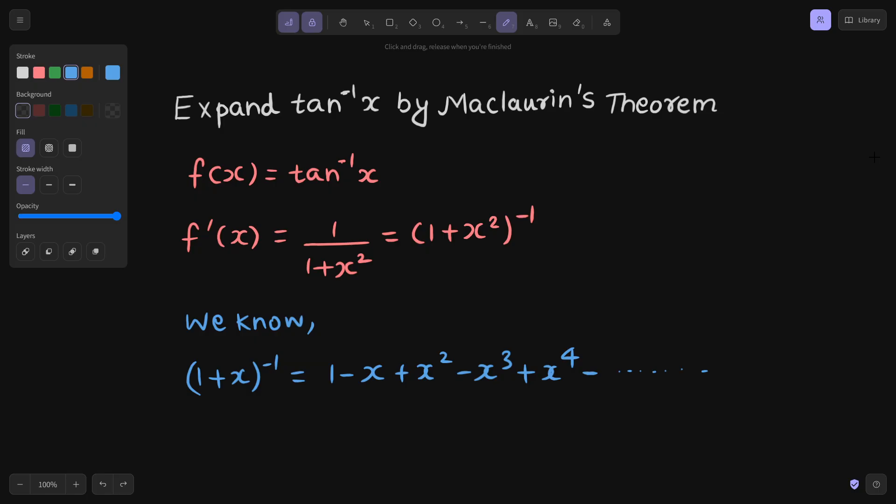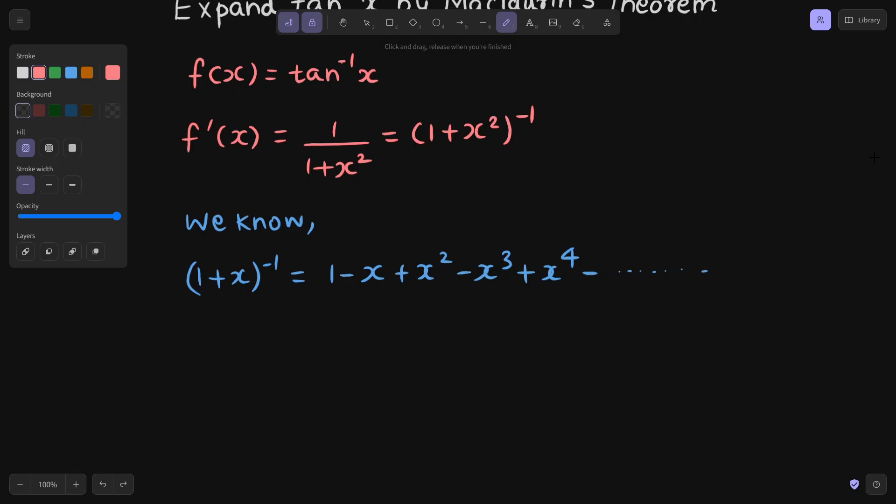This is a very important result. So if we were to use this, we can slightly modify our first derivative and write that as 1 minus of, in place of x, we just have x square. So second term will be x square, then square that, so x power 4, further square that, so x power 6, and you can keep on writing plus x power 8 minus. So this is your f dash x.